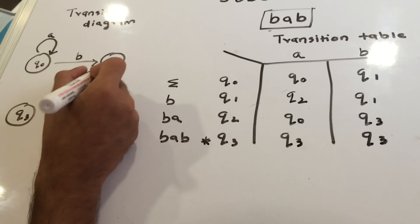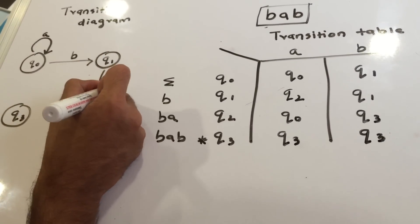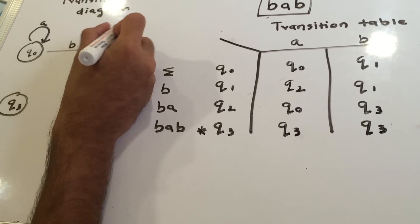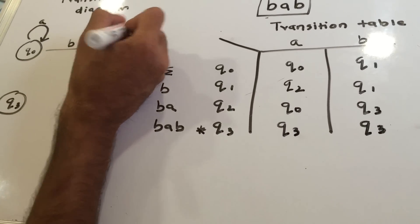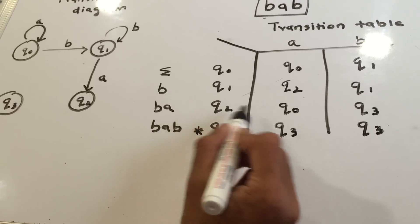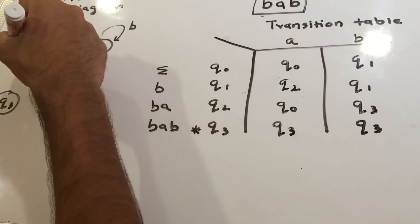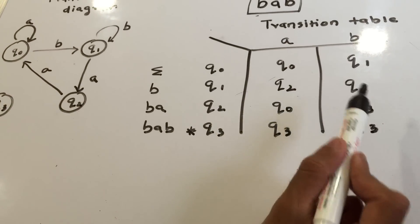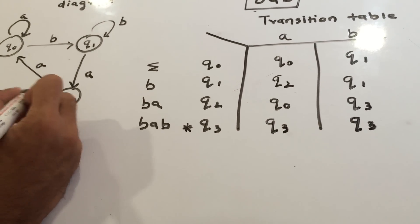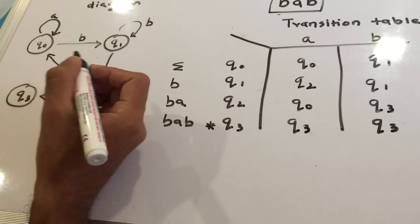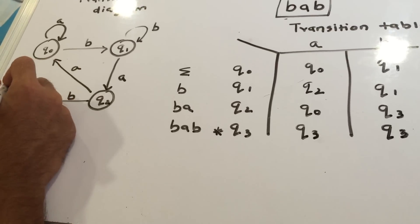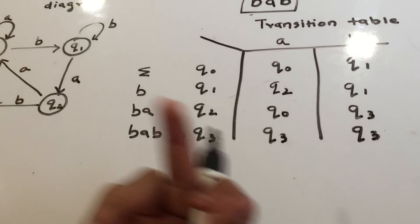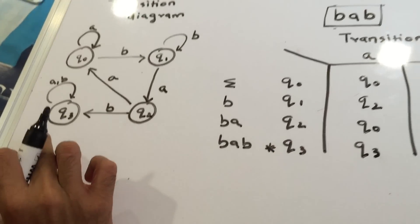In q1, if I get 'a' I go to q2; if I get 'b' I remain in q1. For q2, if I get 'a' I go to q0; if I get 'b' I go to q3. And q3 is our final state — if we get 'a' or 'b', we remain in q3.